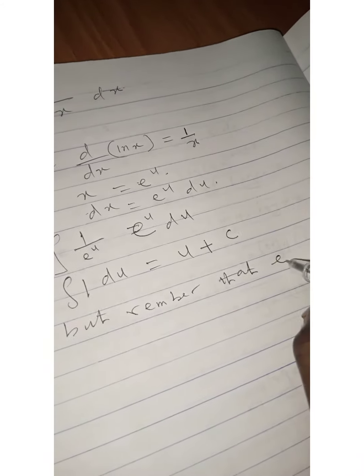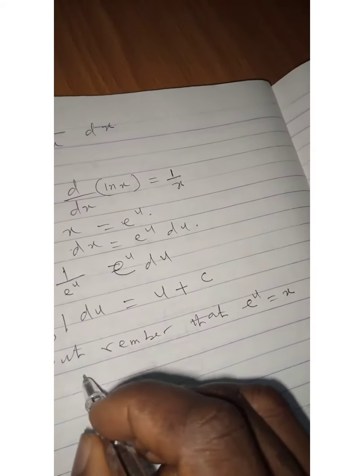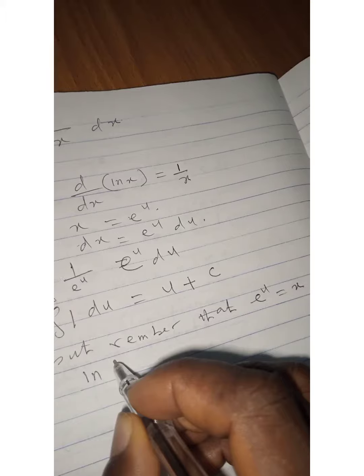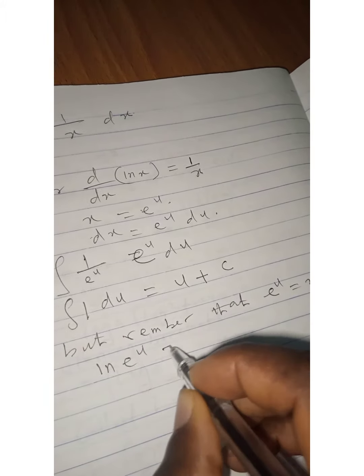But remember that e^u equals x. If we take the logarithm of both sides, we have ln(e^u) = ln(x), which gives u times ln(e) = ln(x).